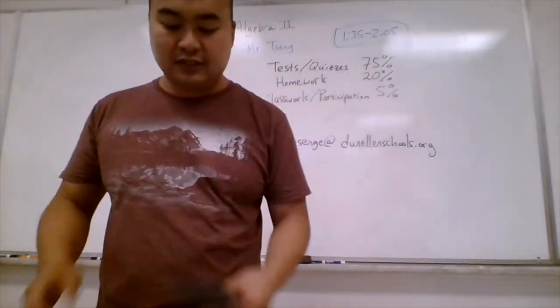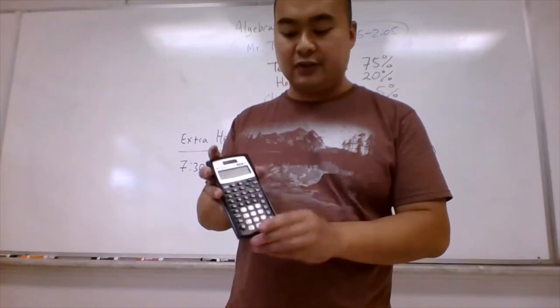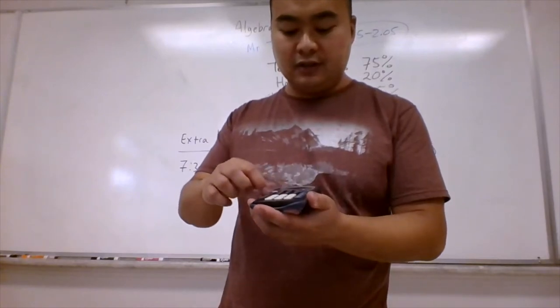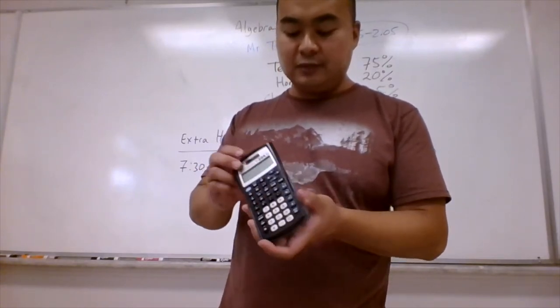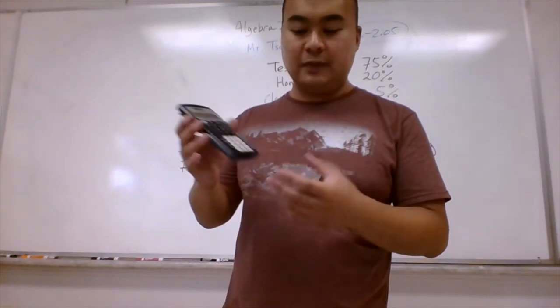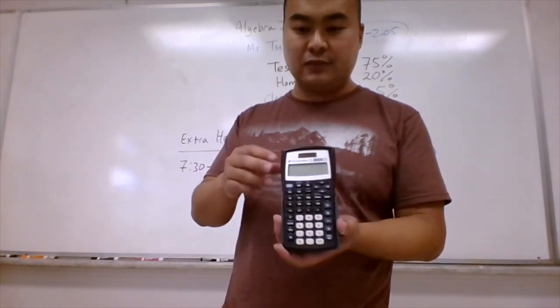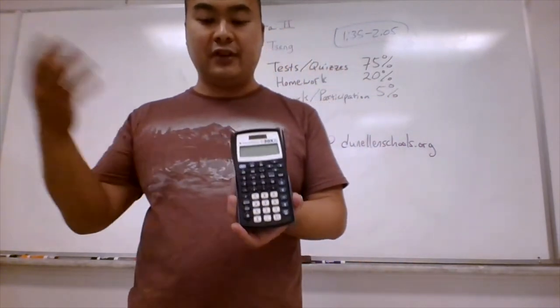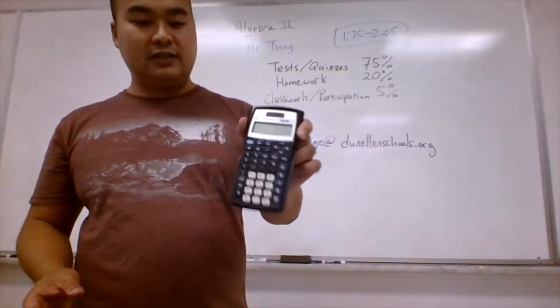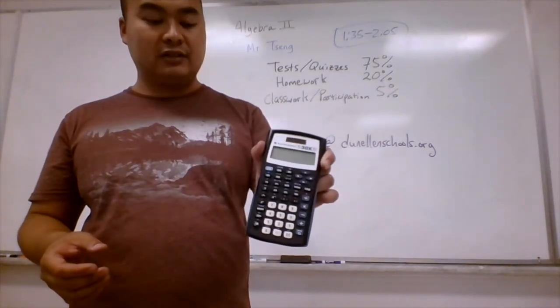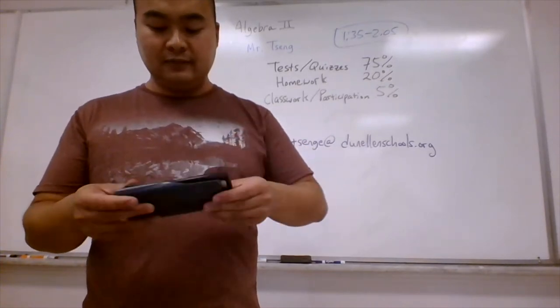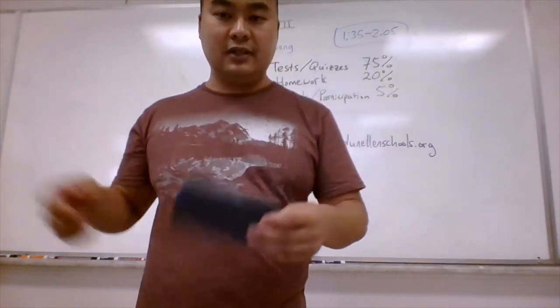Now I want to bring up one more thing. Make sure your child has a calculator for this class. This is just a regular scientific calculator. It has all the functions that we're going to need this year, all the buttons. If you go to Walmart, Target or Staples, these are about $10 right now. These are Texas Instruments. You can get another brand that you prefer, but I'm a big fan of these TI Texas Instruments calculators. So definitely look into this if you don't already have a calculator. If you wait too long to buy one of these, the prices do go up in October.